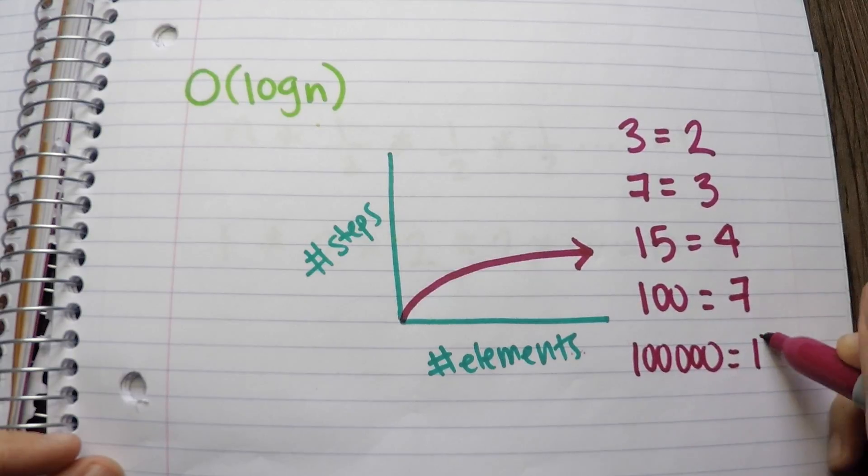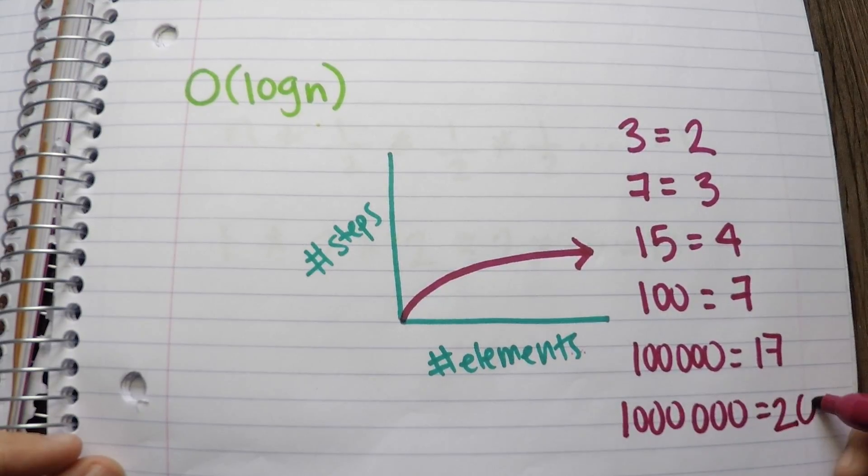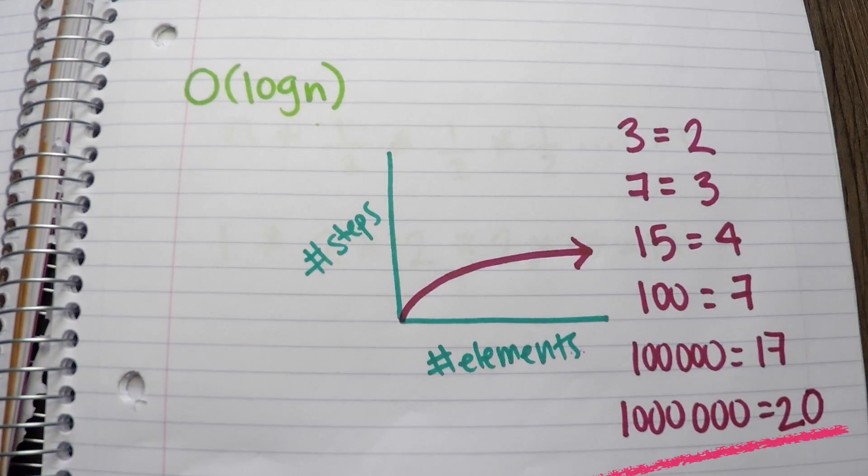A hundred names, seven steps. A hundred thousand names, seventeen steps. And a million names, twenty steps.